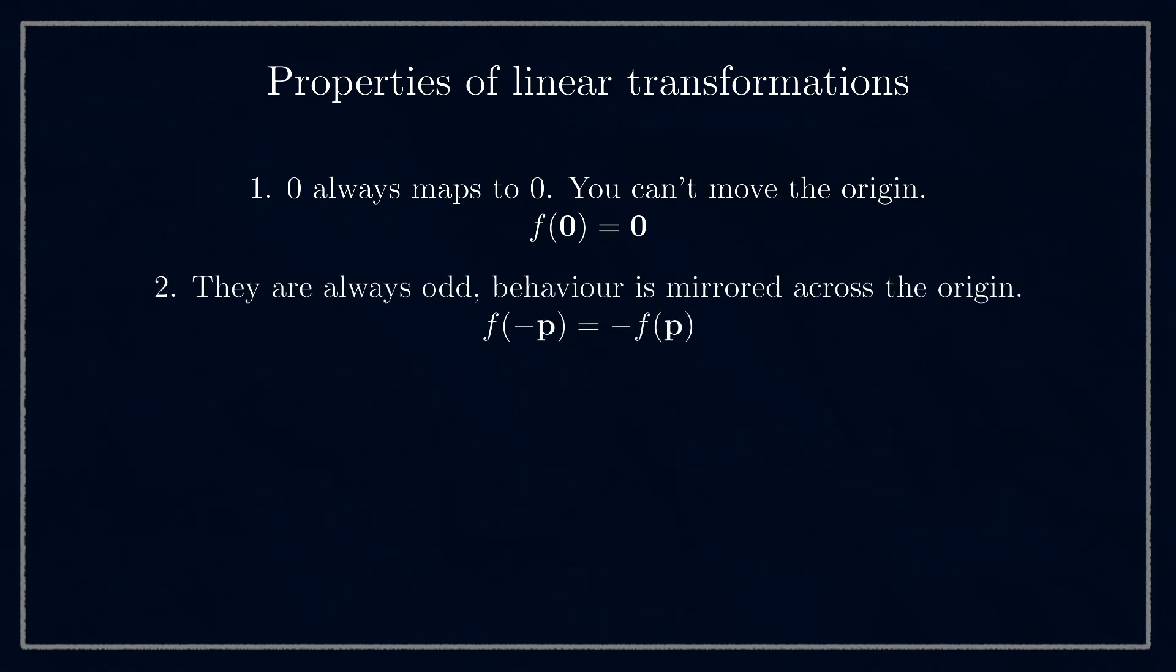Secondly, linear transformations are always odd. f of minus p equals minus f of p. This results in a sort of mirroring effect. If you pick any point and see how it moves under the transformation, the point exactly opposite it through the origin will move the opposite way and will continue to be its mirror. You can sort of imagine there's a pin through the origin and everything is stretching and mirroring around it.